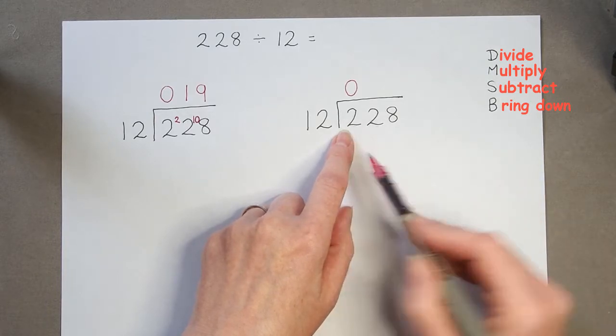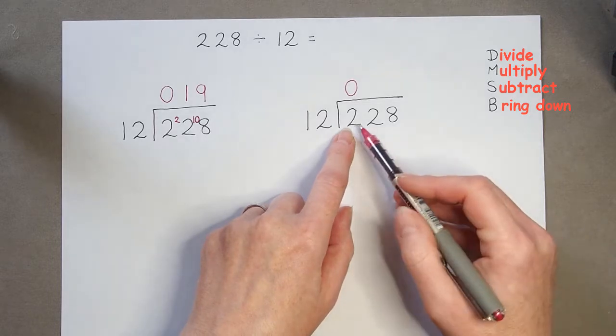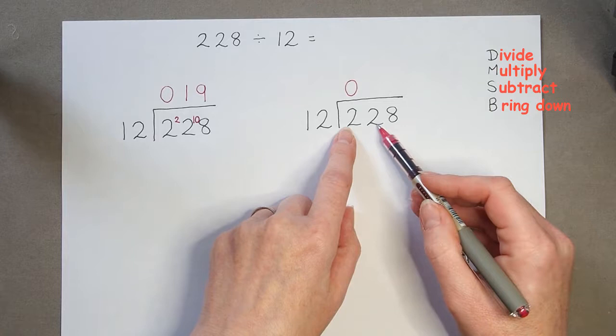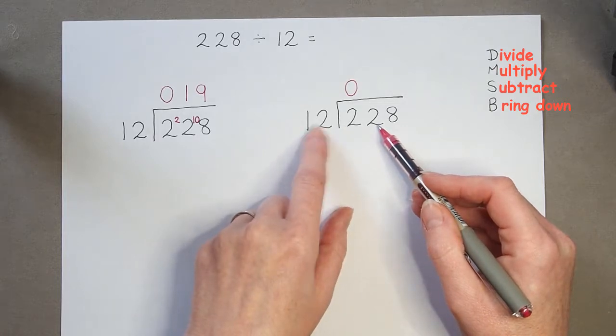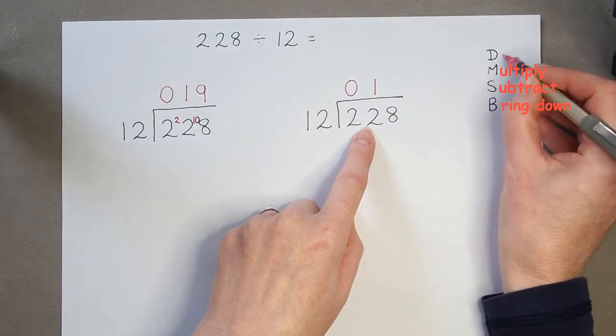And we need that digit there for the next part of our calculating. So, let's have a look here. 22 divided by 12 is 1. So, now I've done the division. I've actually got something in my division.